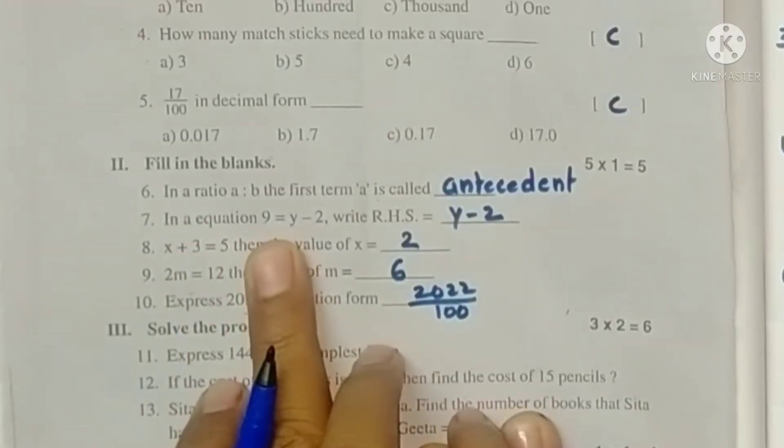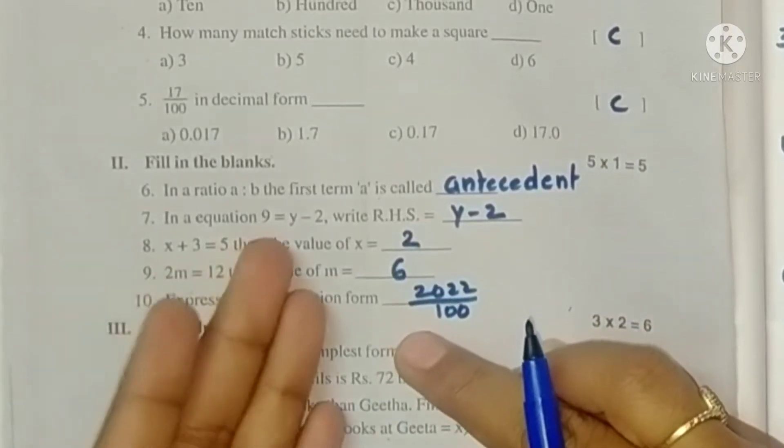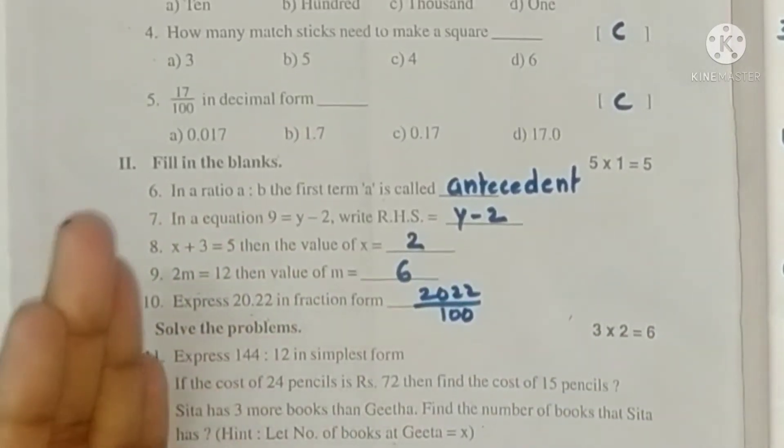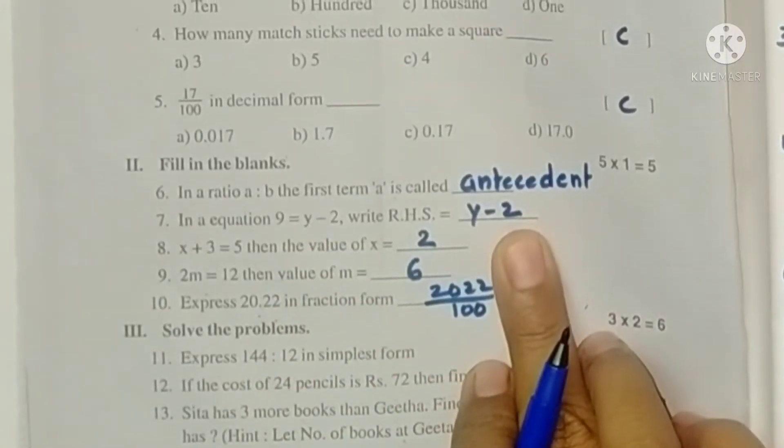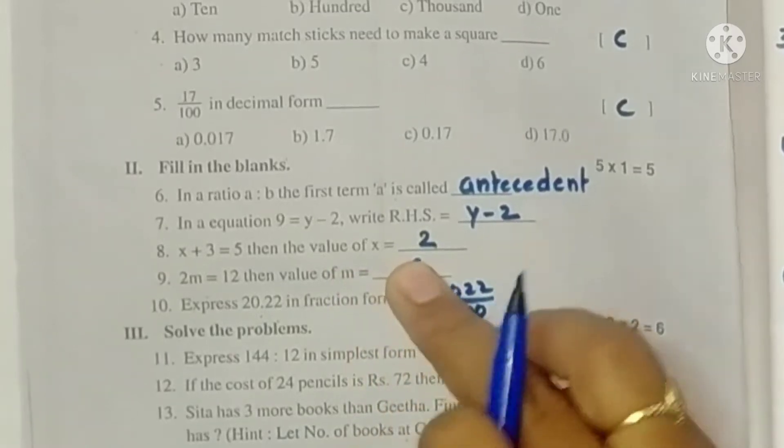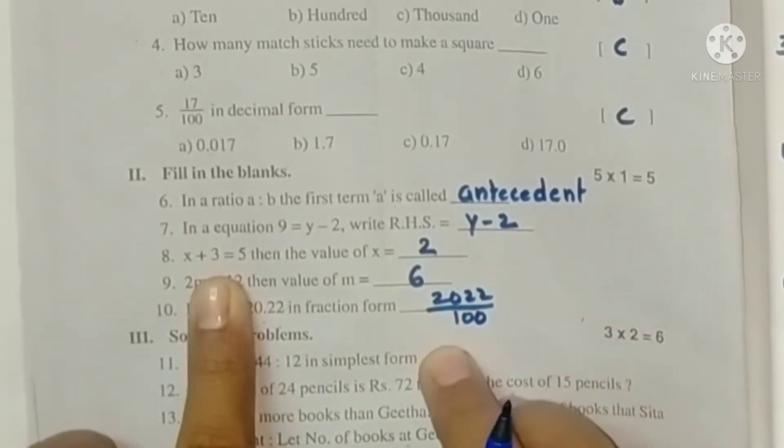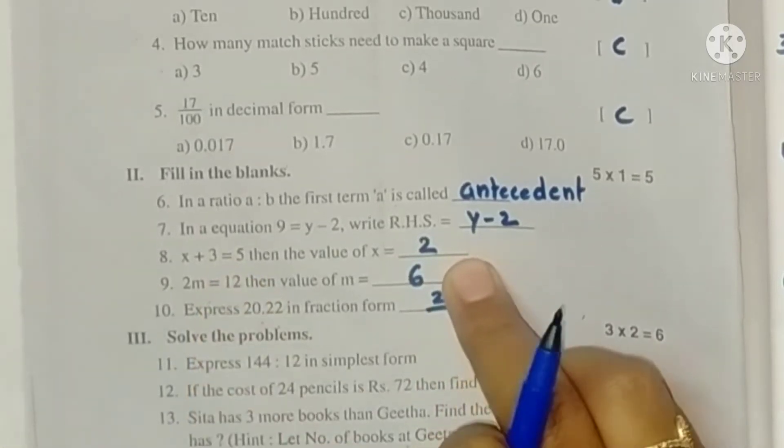Next, in equation 9 equals to y minus 2, write RHS. So in the equation, the right hand side is y minus 2. x plus 3 equals to 5, then the value of x. So what number do we add to 3 to get 5? 2, right? So 2.